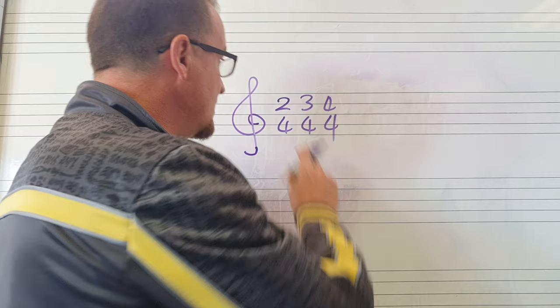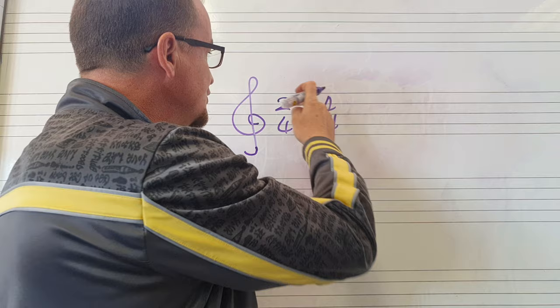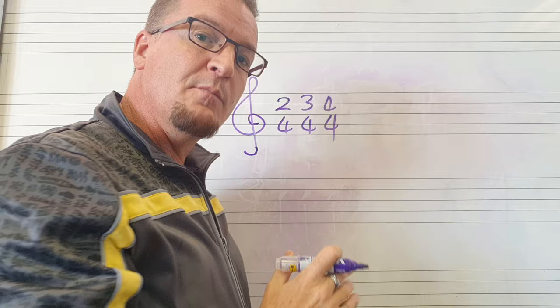2/4 — remember, how many of what? Top number is how many, bottom number is of what? 2/4: 2 crotchets. 3/4: 3 crotchets. 4/4: 4 crotchets. The bottom number symbolizes a note, and in Grade 1, the 4 symbolizes a crotchet.